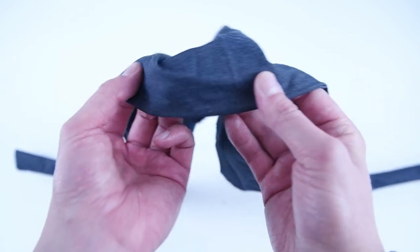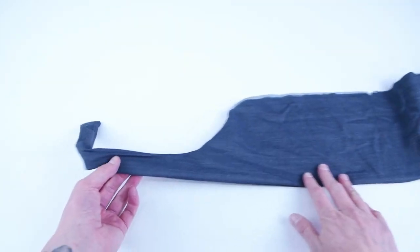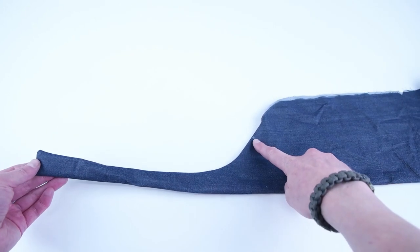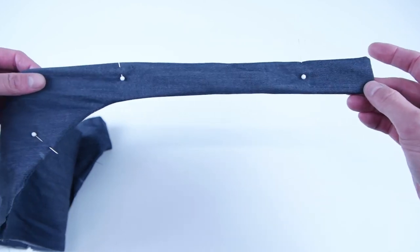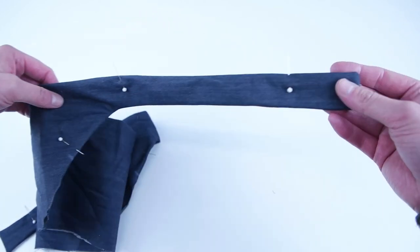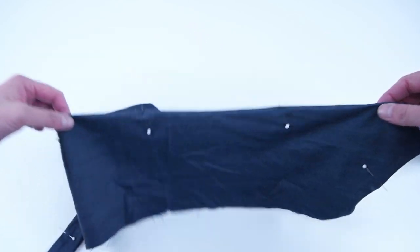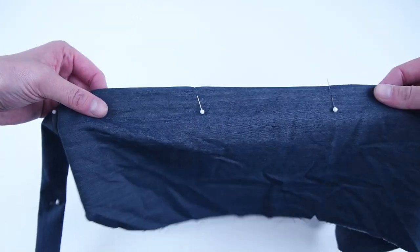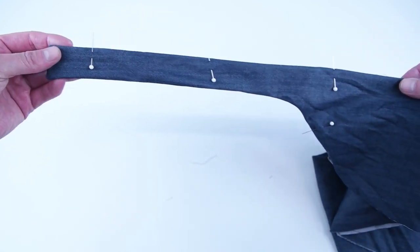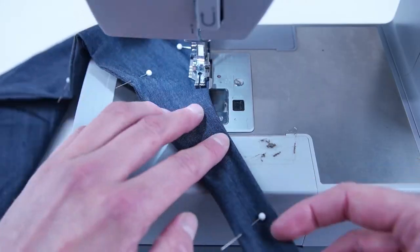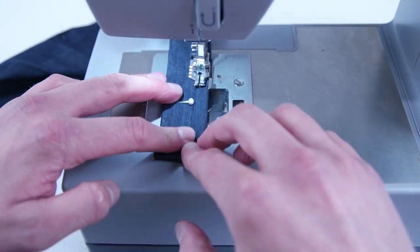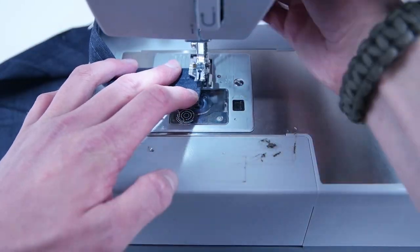We're going to be adding an edge stitch along the entire bottom. The best way to do this is to pin the layers together and use an edge stitch presser foot. We're going to be starting at one sew mark and ending at the sew mark on the opposite side. The presser foot we're using sews at about a quarter inch to the edge. I recommend sewing at a quarter inch or closer to the edge.